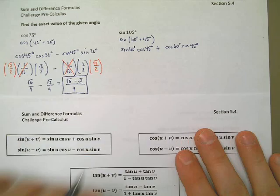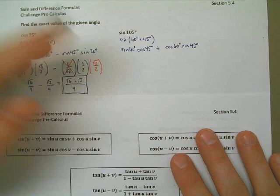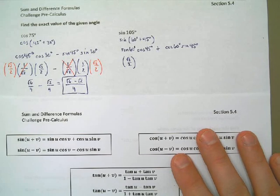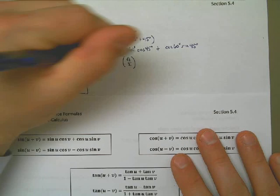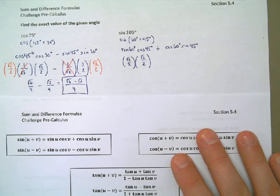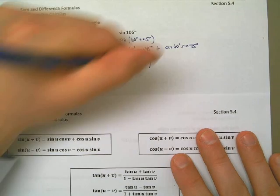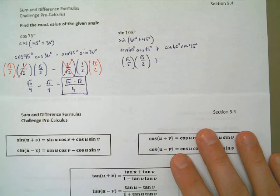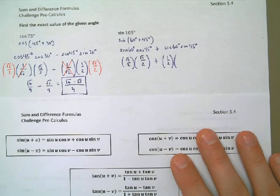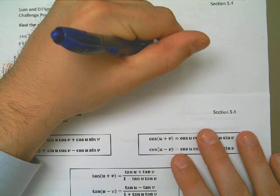Now, I need to go through and figure out what each of these is. The sine of 60, it turns out, is the square root of 3 over 2. The cosine of 45 is 1 over the square root of 2. I'm going to go ahead and rationalize that. I'm going to call it the square root of 2 over 2. Plus, the cosine of 60 degrees is 1 half. And the sine of 45 degrees is the square root of 2 over 2.